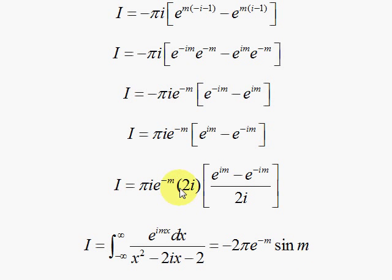So we go to our last step. We get the sine of m. We have a 2, we have the pi, we have e to the minus m, and i squared minus 1. We are finished.